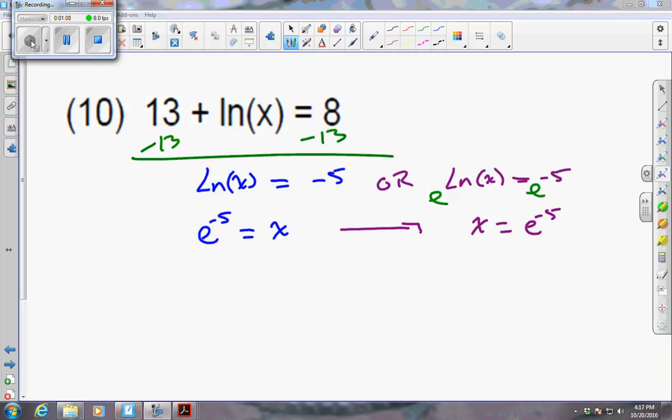Now, notice that these two methods give the same result, and whichever way is easiest to remember is a good way to go. So, we've got a calculator problem. Let's plug this in the calculator, and we end up with x equals 0.00673.